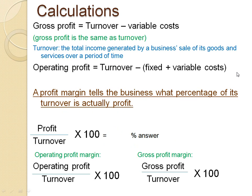For profit calculations: gross profit equals turnover minus variable cost. Operating profit equals turnover minus fixed and variable costs. Turnover is the total income generated by a business from sales over a period of time. Profit margin tells you what percentage of turnover is profit — the formula is: profit divided by turnover times 100. For gross or operating profit margin, use the respective profit figure in the formula.